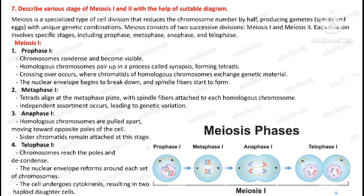Question number seven: describe the various stages of meiosis one and two with the help of a suitable diagram.